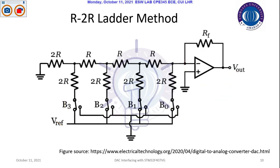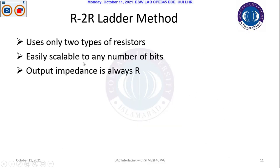This is a comparatively viable solution as compared to the previous one. So let's talk about the R-2R ladder method. There are only two types of resistors: R and 2R. Comparatively, to manage and design it is easier, and this is easily scalable for the number of bits.